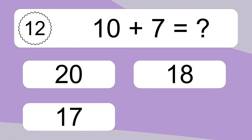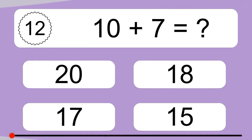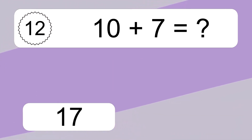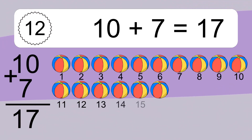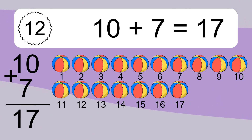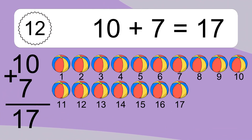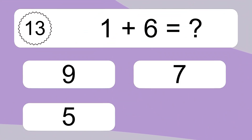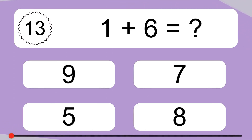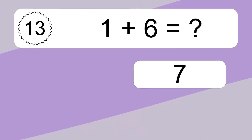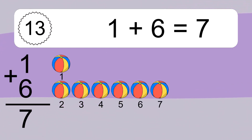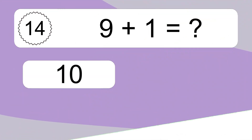10 plus 7 equals what? 10 plus 7 equals 17. Let's count it: 1, 2, 3, 4, 5, 6, 7, 8, 9, 10, 11, 12, 13, 14, 15, 16, 17.